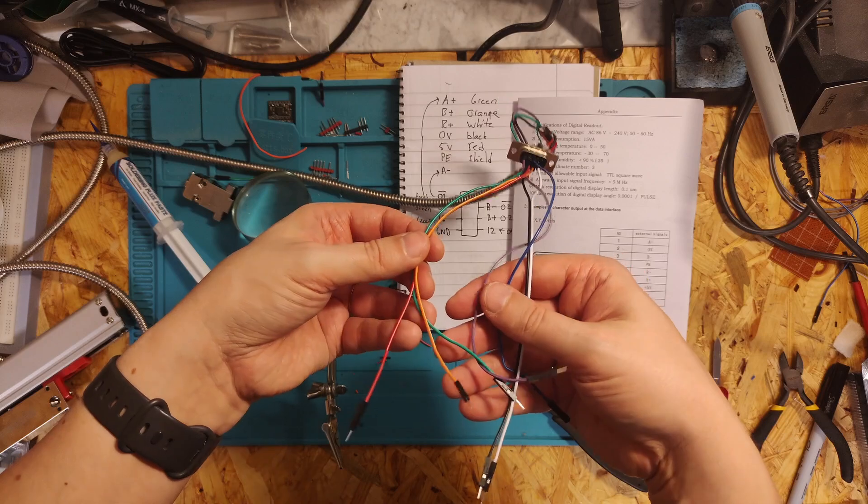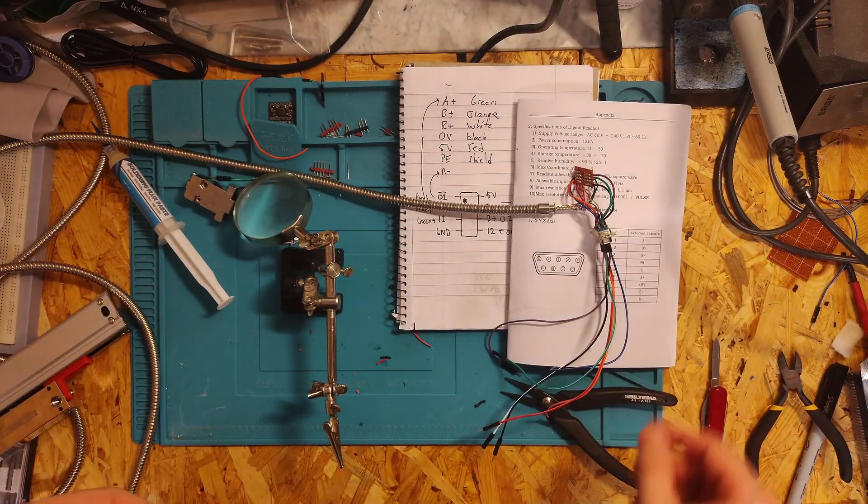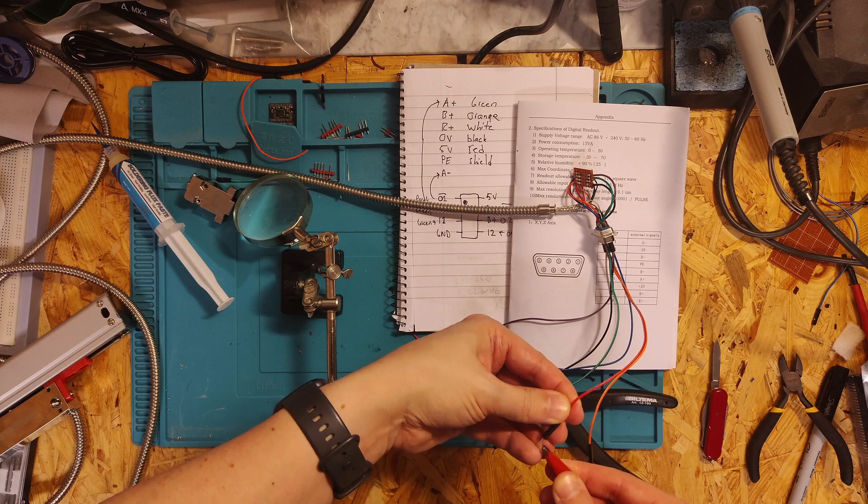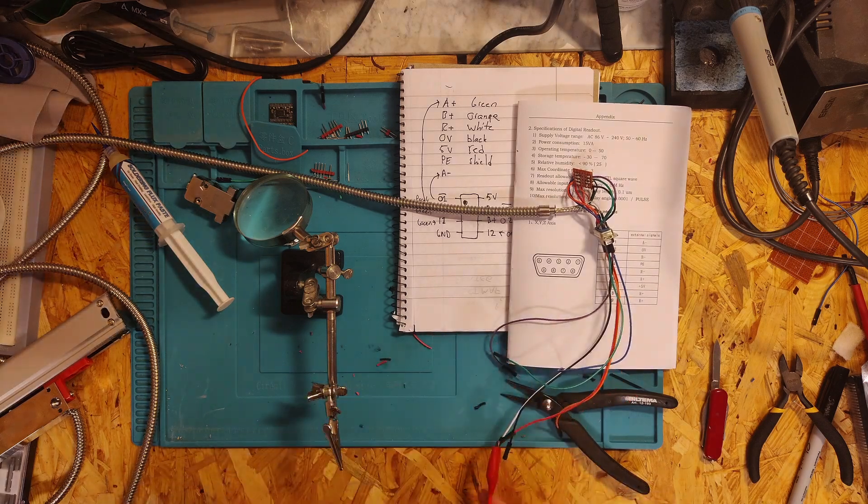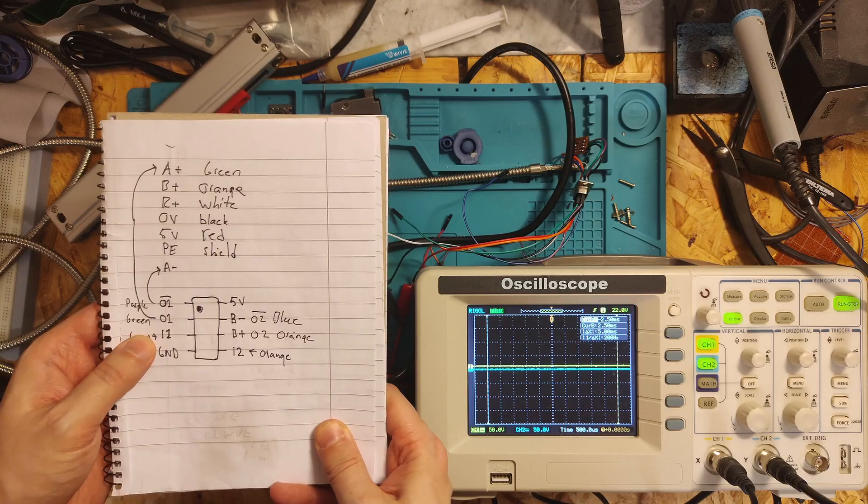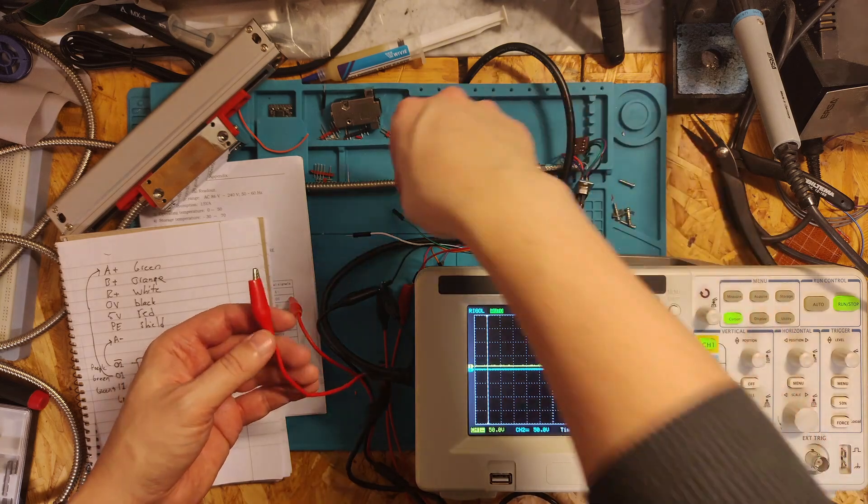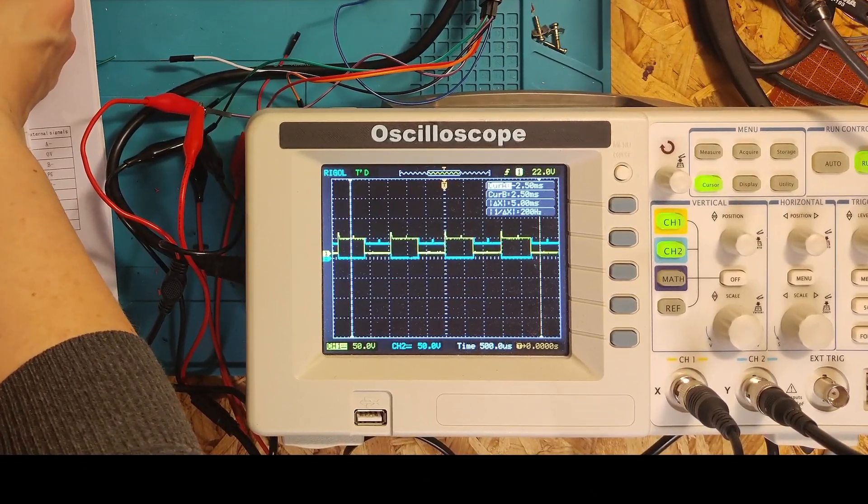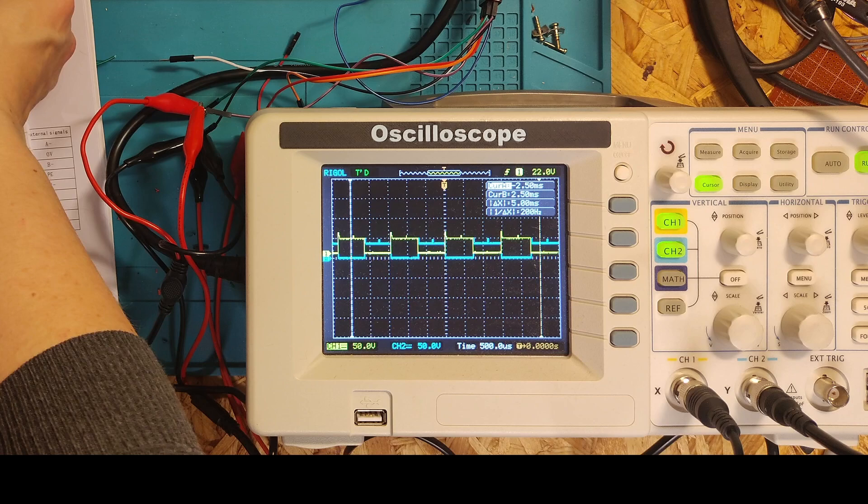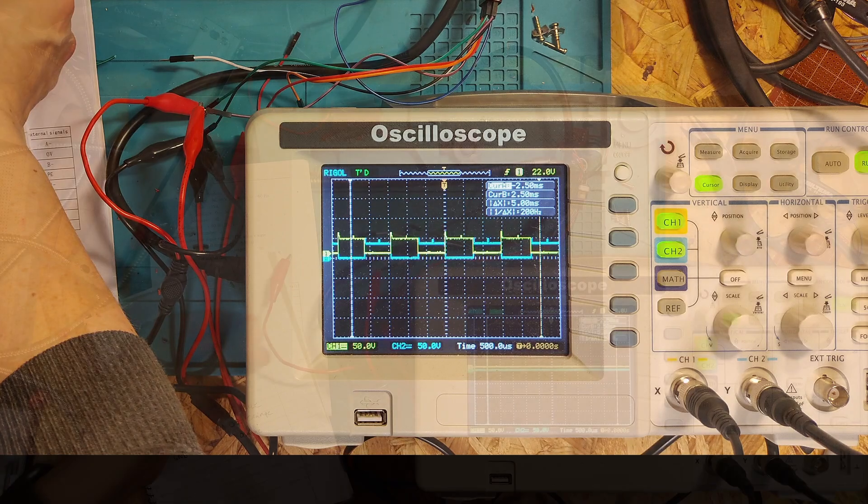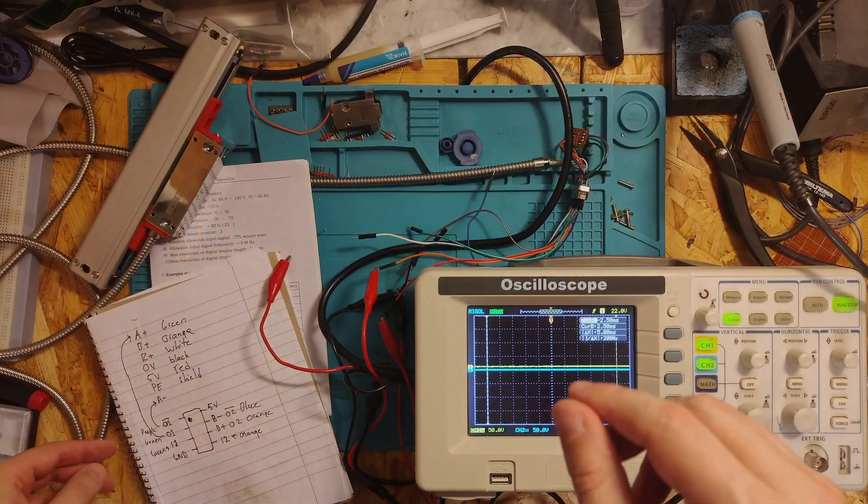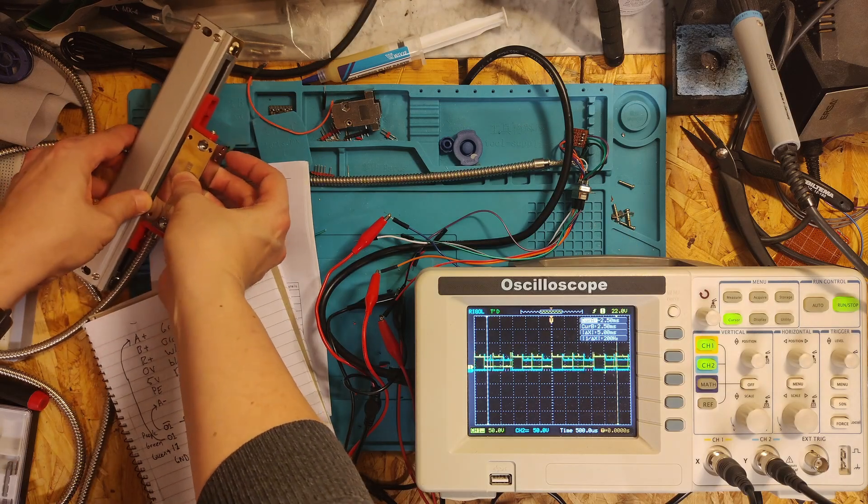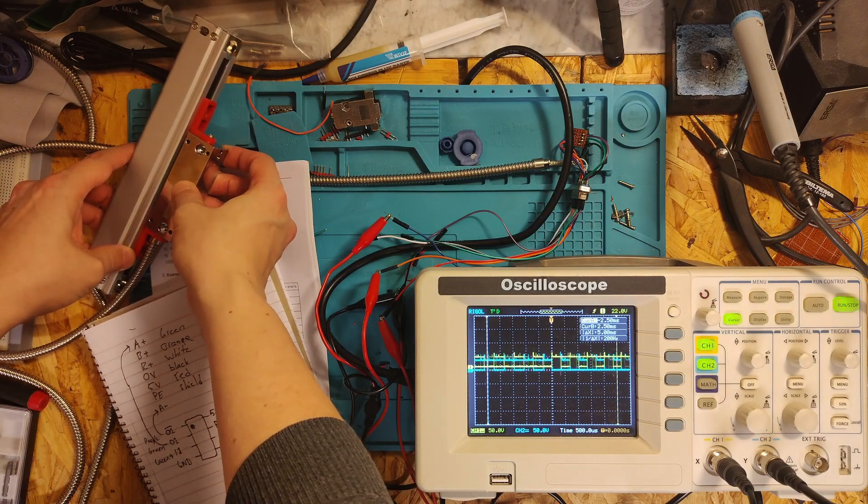Let's connect it to the oscilloscope and power once more and see if we'll be getting a differential signal. My oscilloscope only has two channels, so we need to measure each differential signal separately. And there we have it, a differential signal. Let's just verify that this second pulse works as well. Yes it does, nice.